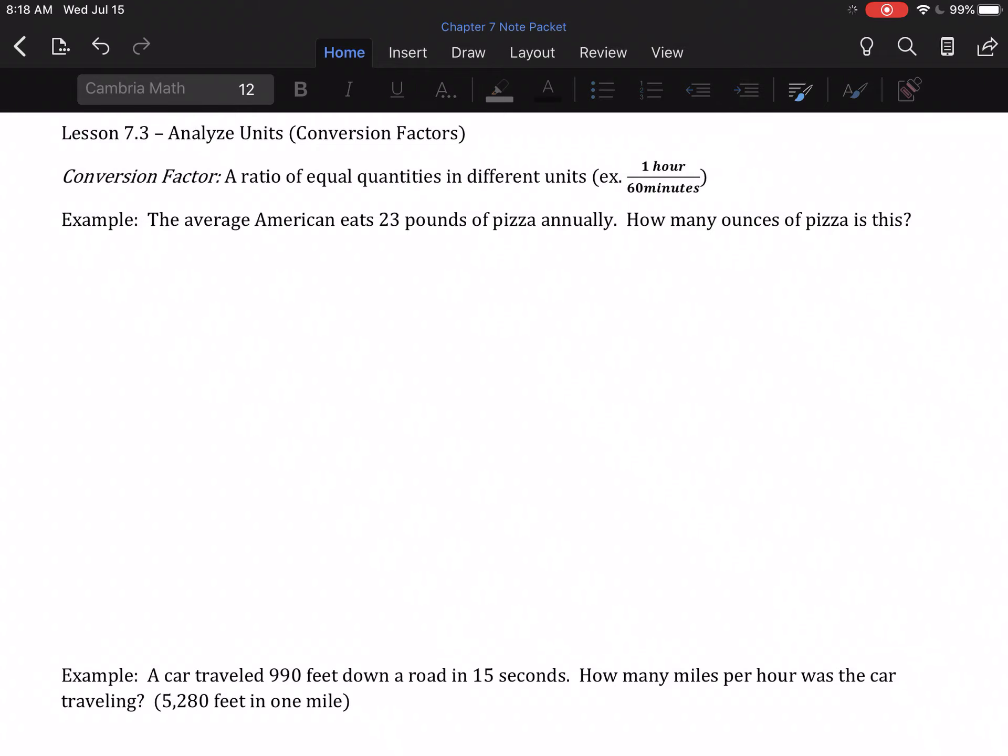Section 3 is titled Analyze Units in your book, but I call it Conversion Factors. We're going to take measurements and convert them. So a conversion factor is a ratio of equal quantities in different units. For example, 1 hour and 60 minutes are the same thing. They're just written 1 over 60 with their labels. That's something divided by itself. It's 1 in disguise.